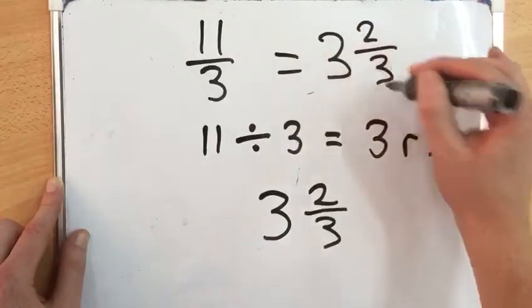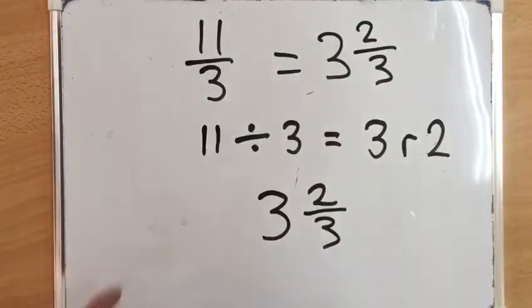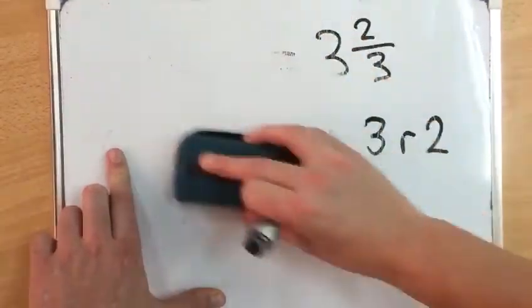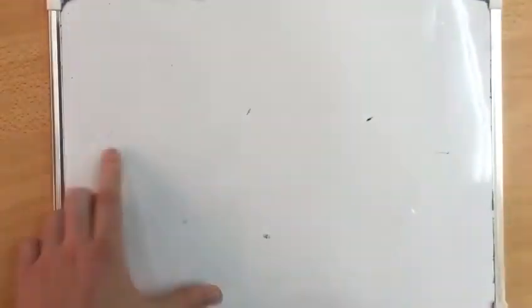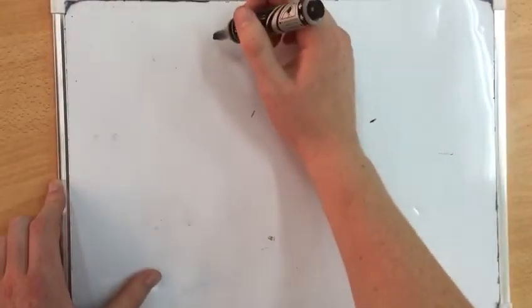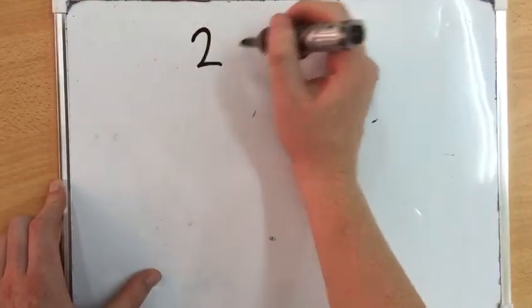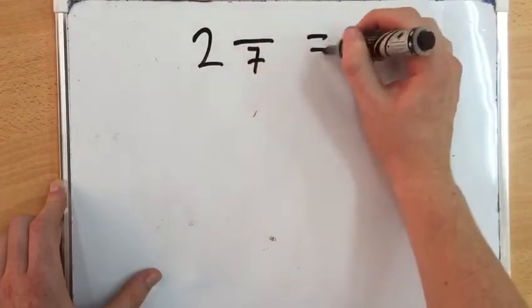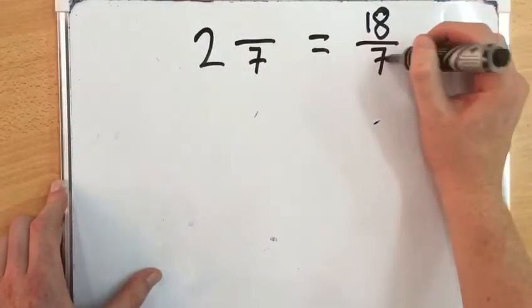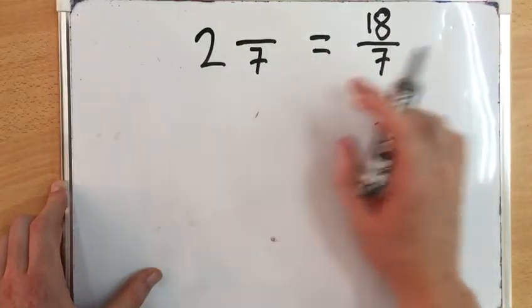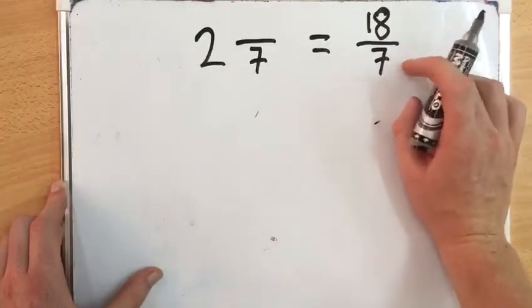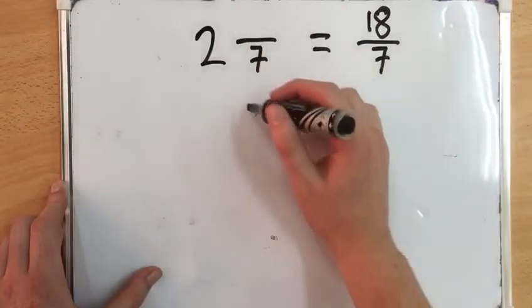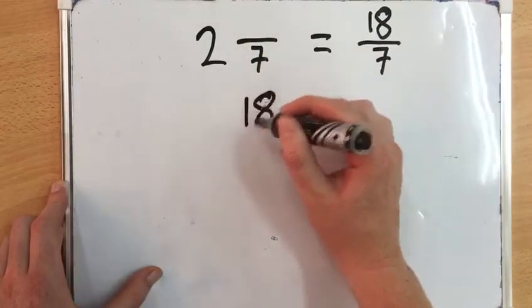Let's look at another example. Question 17 is 2 and something over 7 equals 18/7. We do not know this mixed number, but we know our improper fraction. So we work backwards to find our missing number.